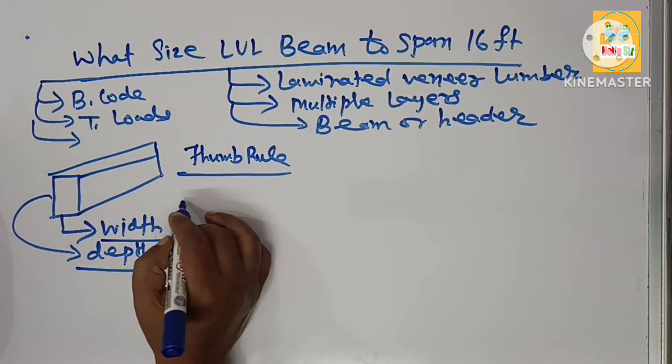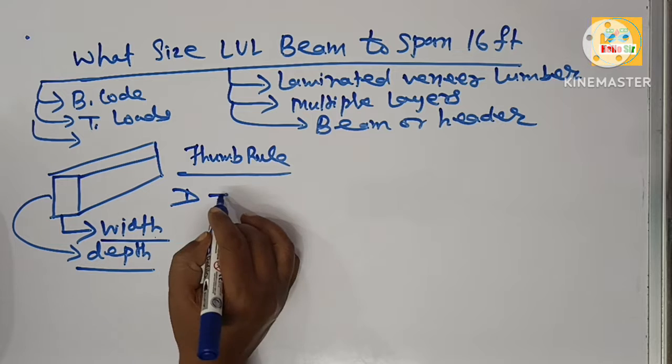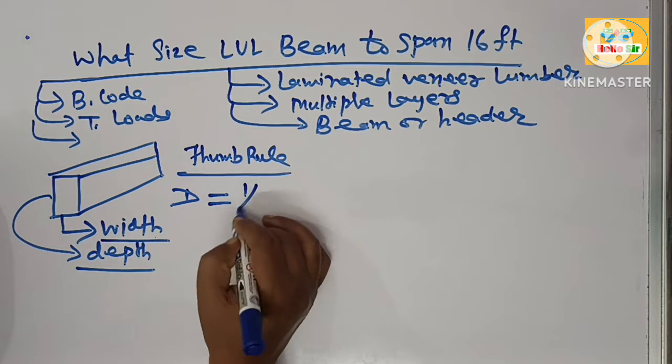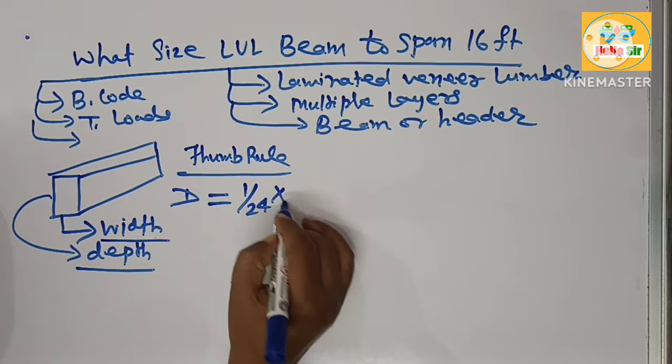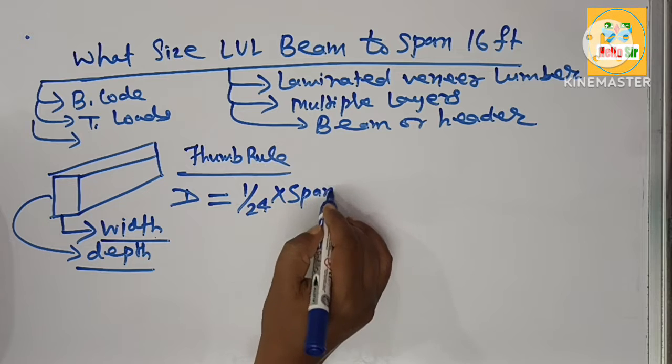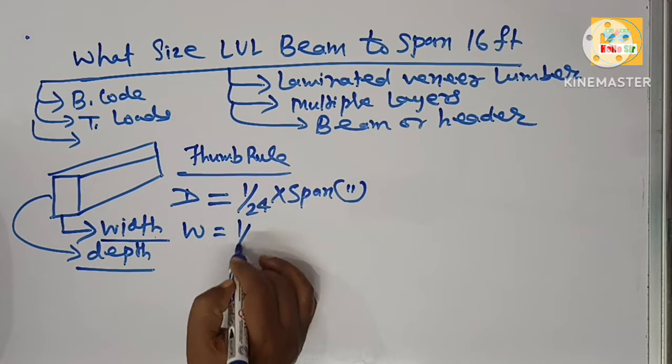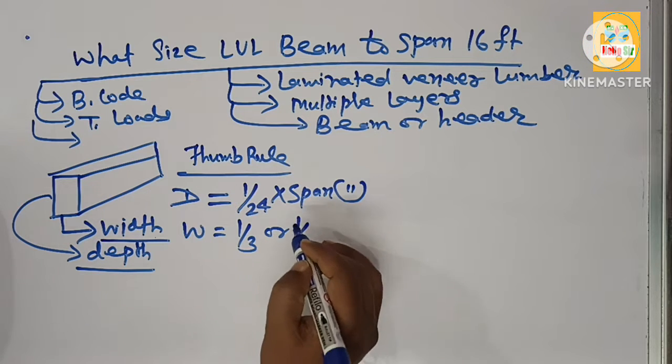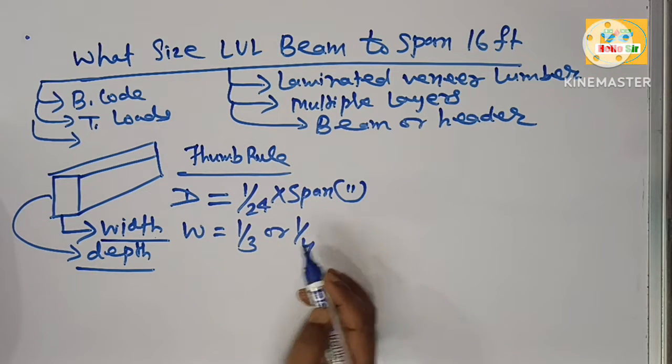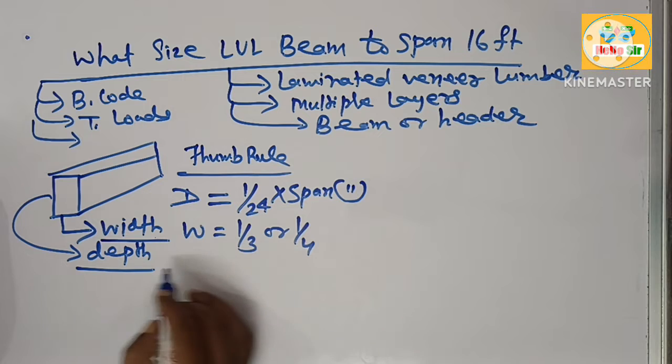the depth of the LVL beam needs to be 1/24th of the span in inches, and their width is equal to 1/3 or 1/4 of the depth of the LVL beam.